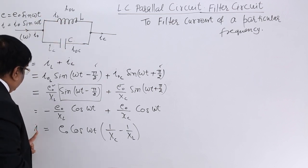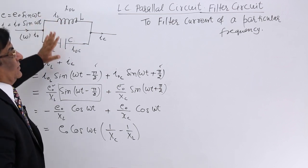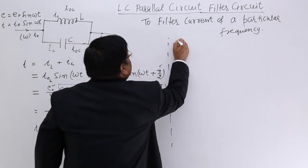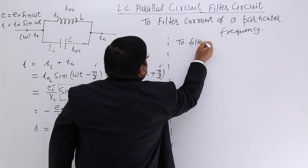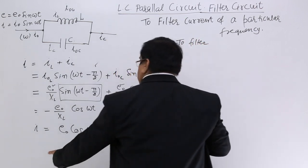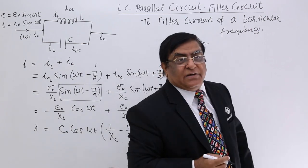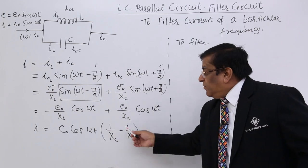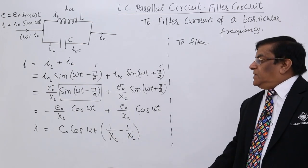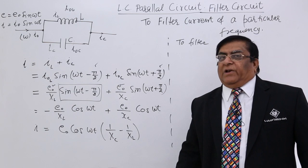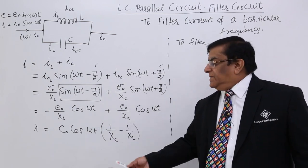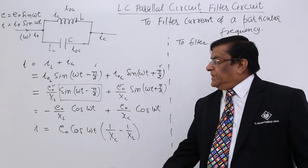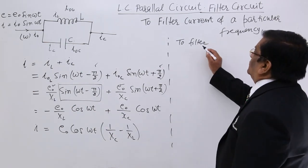Now we want to make this current zero. We want to filter out this current. So to filter, this should become zero and how this will become zero? This will become zero if this one component is zero. Cos ωt will not be zero because that is a fluctuating term. This if it is zero, this I will be permanently zero.